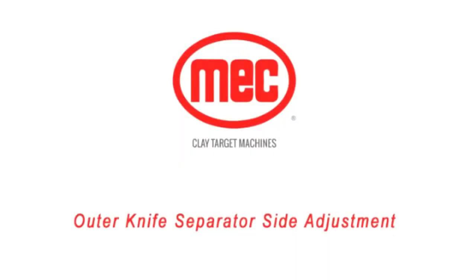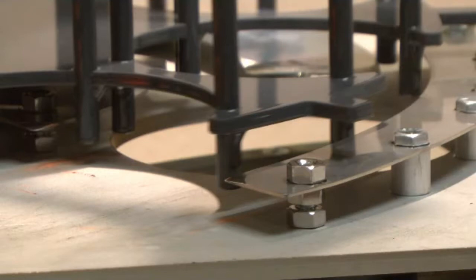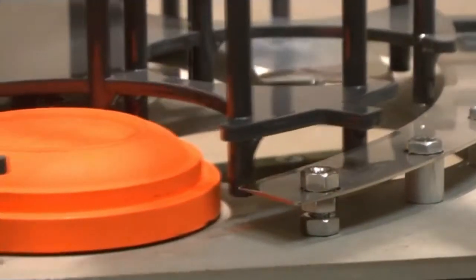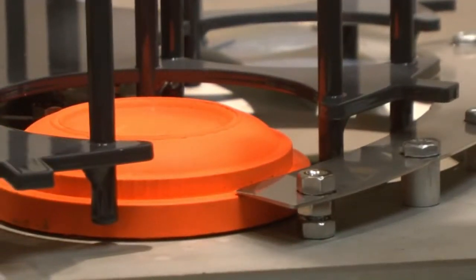For knife separator adjustment, follow these instructions. Place a clay in the carousel and rotate counter-clockwise so that the clay starts to pass underneath the knife edges.